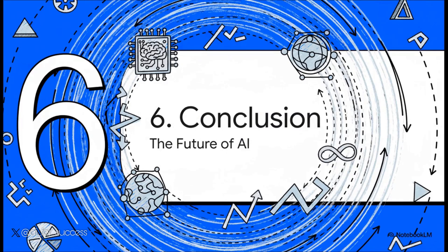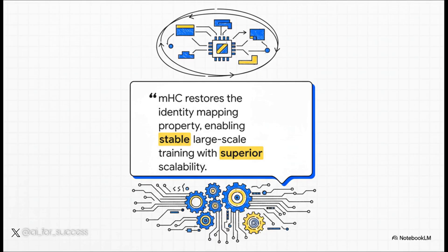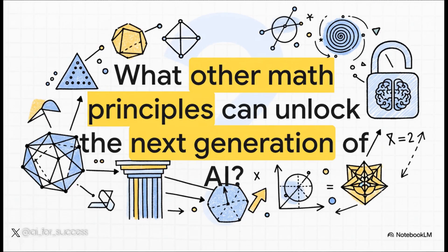Let's zoom out and think about the big picture. What's the real significance of this research for the future of AI? The authors sum it up perfectly: MHC restores the identity mapping property, enabling stable large-scale training with superior scalability. This isn't just a clever trick — it's a practical blueprint for how we can build the next generation of AI to be even more powerful, but also fundamentally stable and reliable. What's so cool is that this work used a principle from geometry to bring stability and power to AI. And that leaves us with a final, really fascinating question: if a concept from geometry holds a key like this, what other fundamental principles from deep mathematics are just waiting out there to unlock the next great leap forward for foundational models?